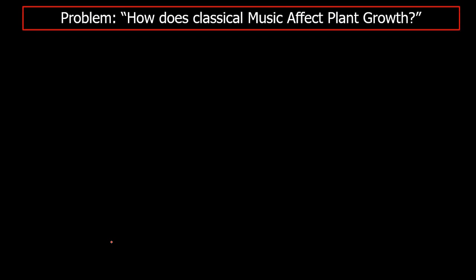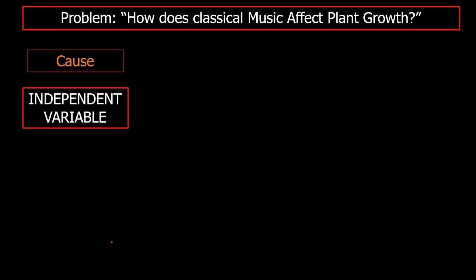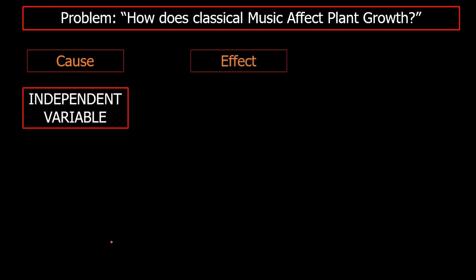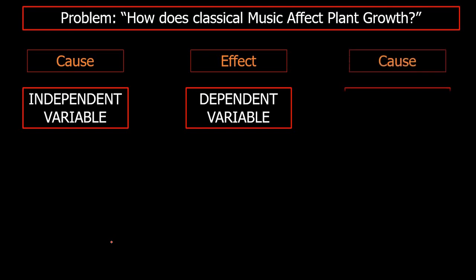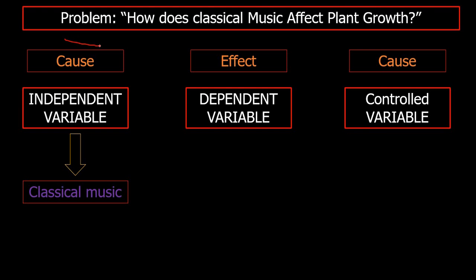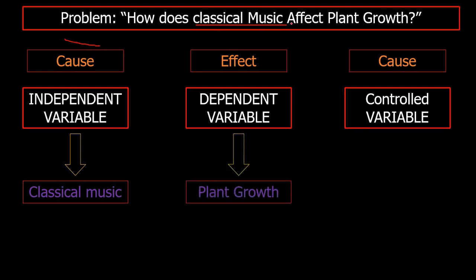Let's have an example. The problem for our experiment would be: how does classical music affect plant growth? The independent variable is the cause, the dependent variable is the effect, and the controlled variable is what remains constant. So what would be the independent variable for this problem? The independent variable is the classical music — the one that you will change.